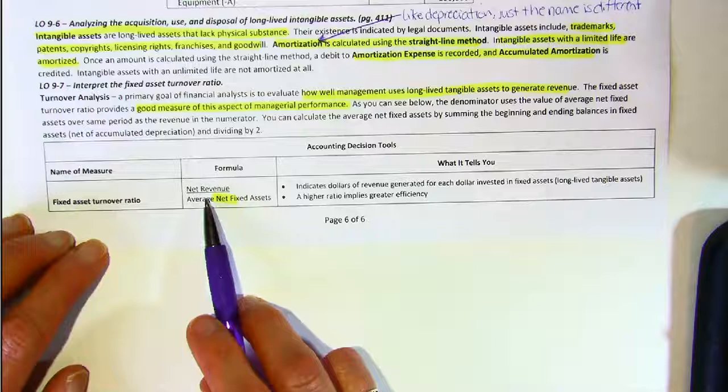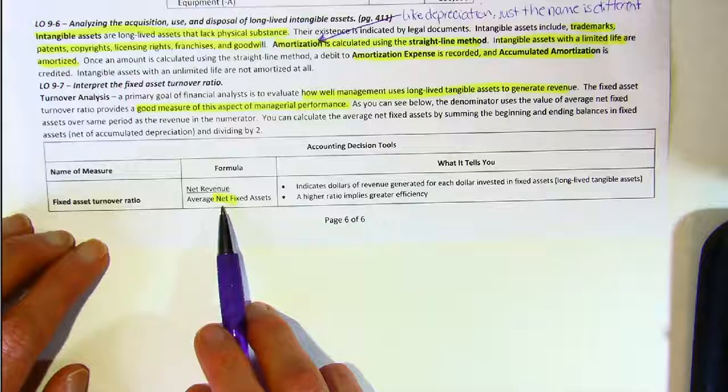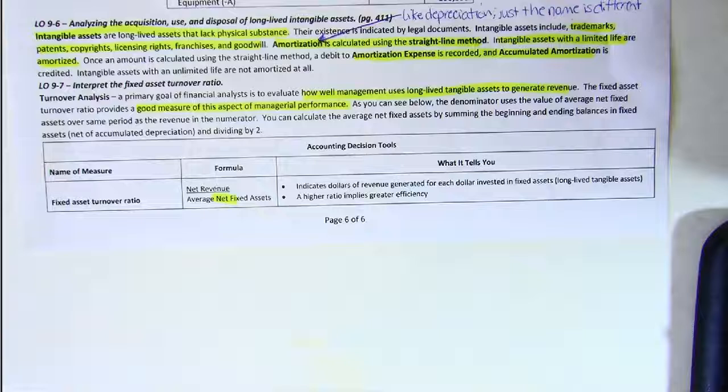Net means we subtract something — specifically, we subtract accumulated depreciation from our long-lived tangible assets. So you have to average out your net fixed assets, which are assets less accumulated depreciation. If you only have year-end data, take the end of last year plus the end of this year, add them together, and divide by 2 to get the average. And that concludes our lectures for chapter 9.